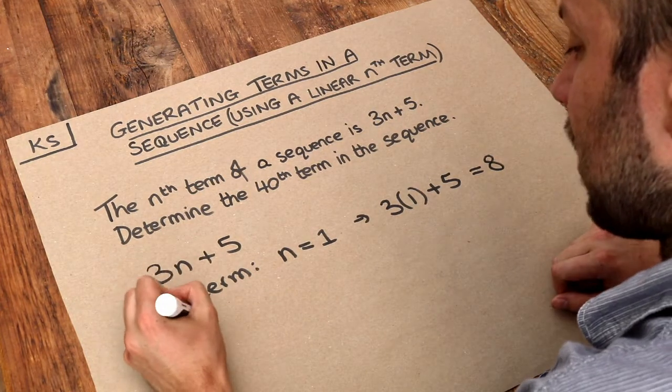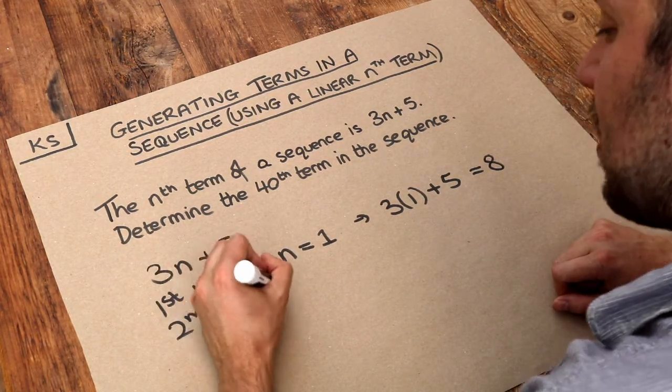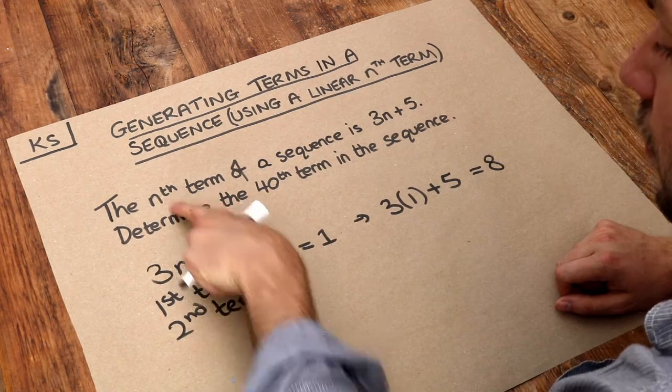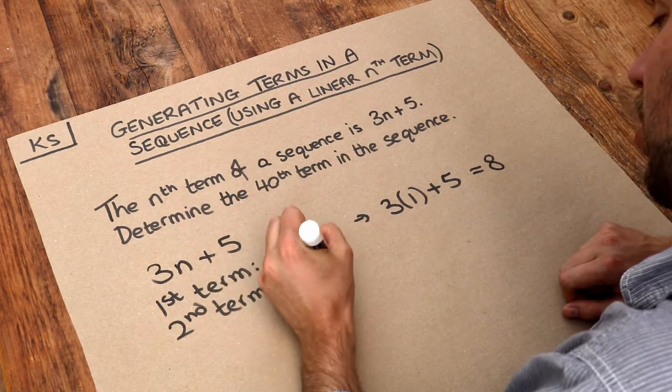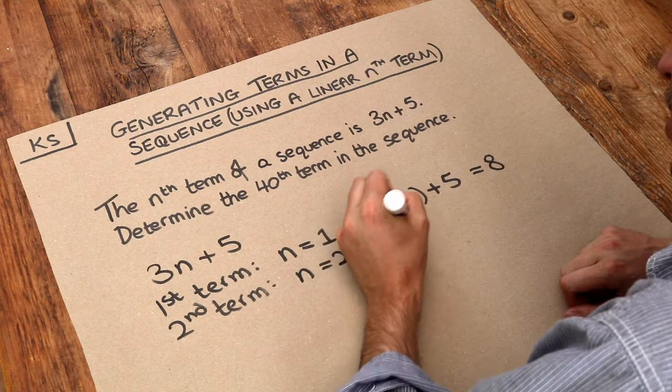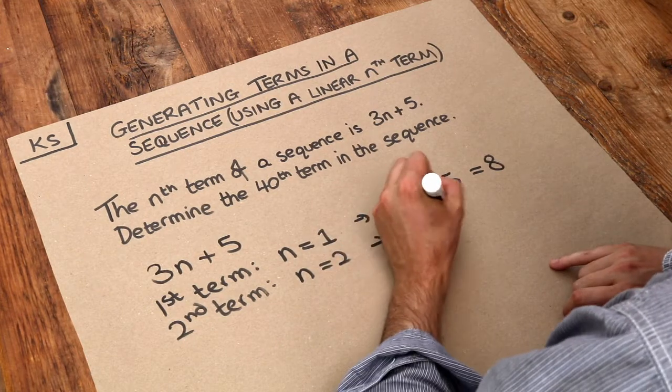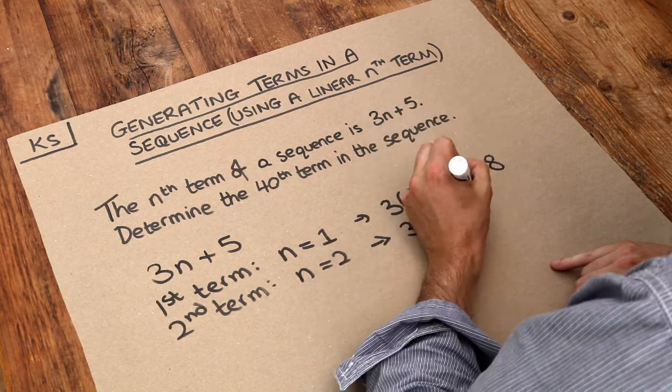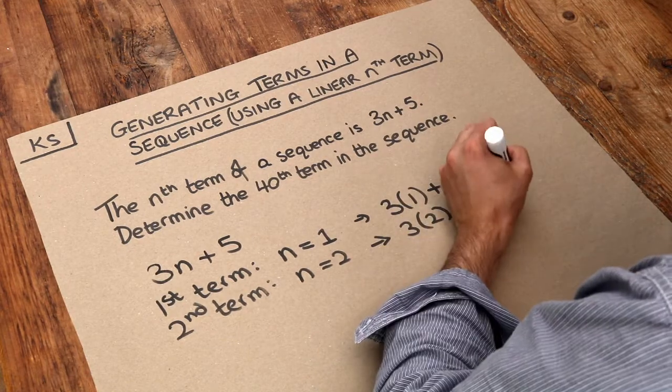If we wanted the second term of the sequence, this time the position n is 2. So n will be equal to 2, and we can again sub in 2 to get 3 times 2 plus 5, which is equal to 11.